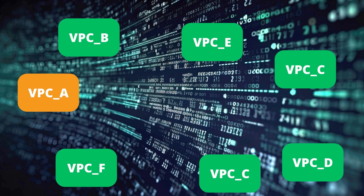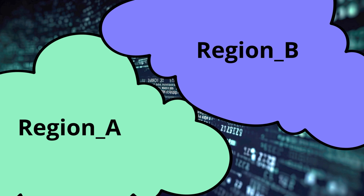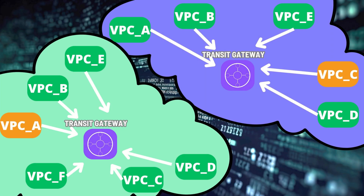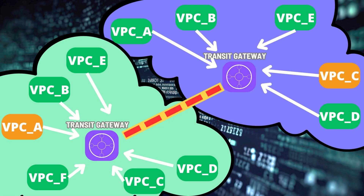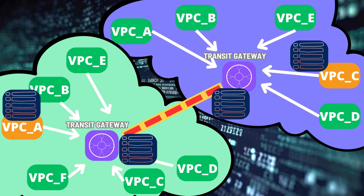If you have a lot of networks you probably also use transit gateways in many regions or even in many AWS accounts. You can create a peering attachment on your transit gateways. After creating a peering attachment request, the owner of the peer transit gateway must also accept the request. Of course, to route traffic between transit gateways you also need to update route tables. Don't worry, I'll show you everything. That's all from theory. Let's go to practice.